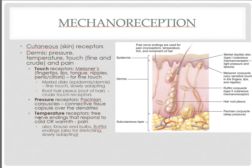For temperature receptors, these are scattered throughout the dermal layers. We have Krause end bulbs and Ruffini endings located throughout that tell us other modalities, including temperature and pain.